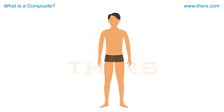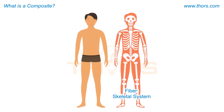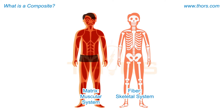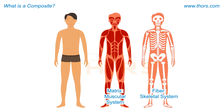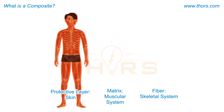The fiber in a human body is the skeleton, which gives the human body shape. The matrix in the human body is the surrounding tissue, like the muscular system, which is bonded to the skeleton. The protective layer for the human body is the skin, which covers the body's skeleton and tissues, or the fibers and the matrix.